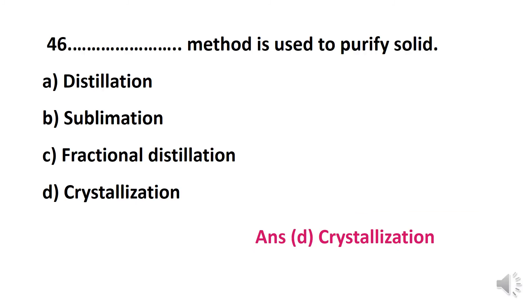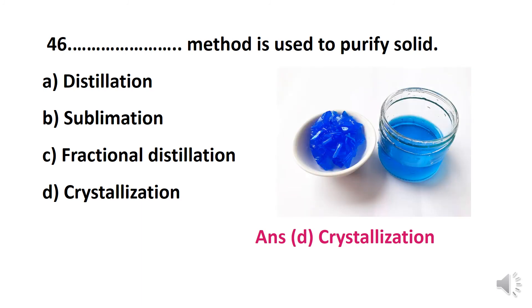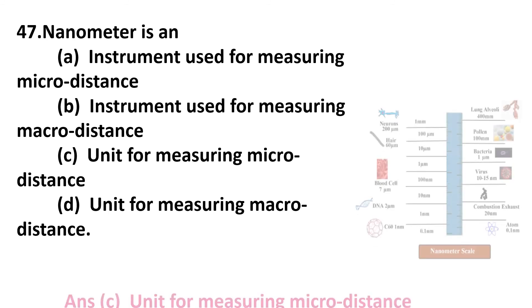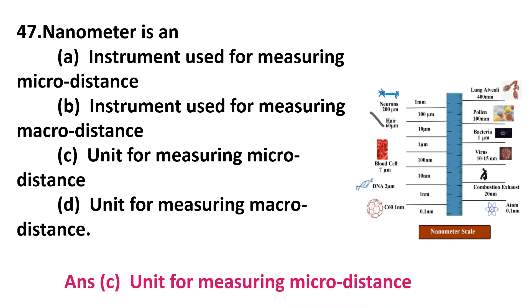Question 46: __ method is used to purify solids — distillation, sublimation, fractional distillation, or crystallization? The answer is option D: crystallization. Question 47: a nanometer is — option A: an instrument used for measuring micro distance, option B: an instrument used for measuring macro distance, option C: a unit for measuring micro distance, option D: a unit for measuring macro distance? The correct answer is option C: it is a unit for measuring micro distance.